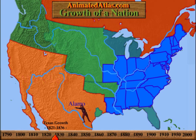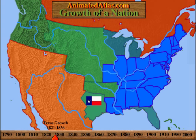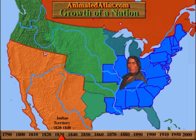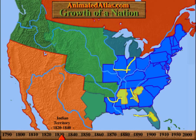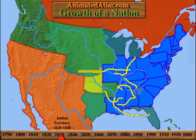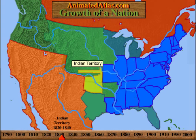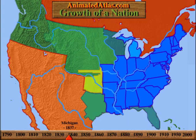The Texans revolted against the Mexican government in 1835 and became an independent nation the following year. As the nation expanded, the Native American tribes east of the Mississippi River were removed west in forced marches to the Indian Territory in what is now Oklahoma. Arkansas was admitted in 1836 as a slave state and Michigan in 1837 as a free state.